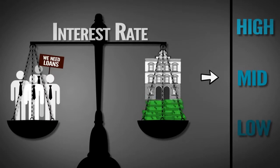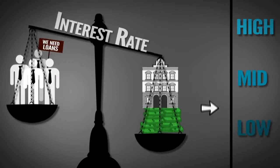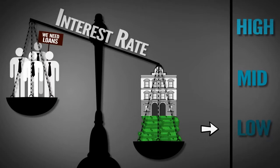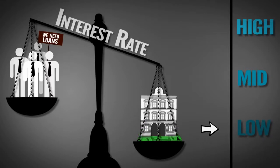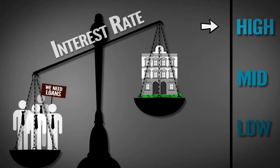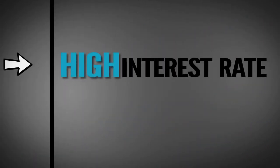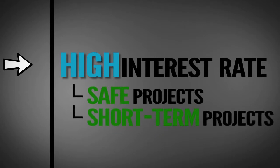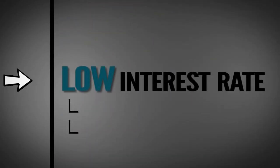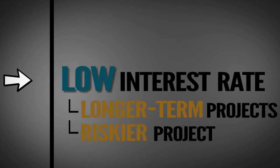The more people save, the more funds become available to lend, and the lower the interest rate. The less people save, the less funds available to lend, and the higher the interest rate. When credit's expensive, only the safest projects get funded. When credit's cheap, entrepreneurs can start longer-term or riskier projects.